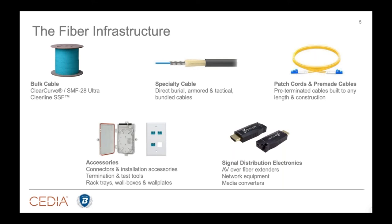But where fiber really starts to depart from the traditional twisted pair conversation — or really any low-voltage copper-based cable conversation — is in the pre-made options. Whether we call those patch cords or pre-terminated cables, fiber is a little different than traditional cables. When we think about patch cords or pre-terminated cables, we usually think about rack interconnects — short cable runs connecting two boxes in a rack.